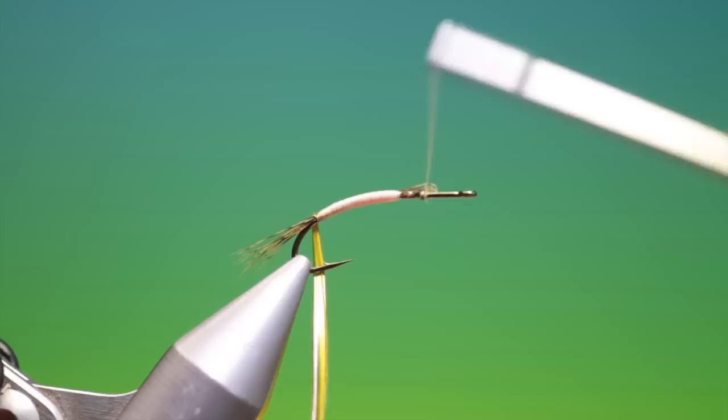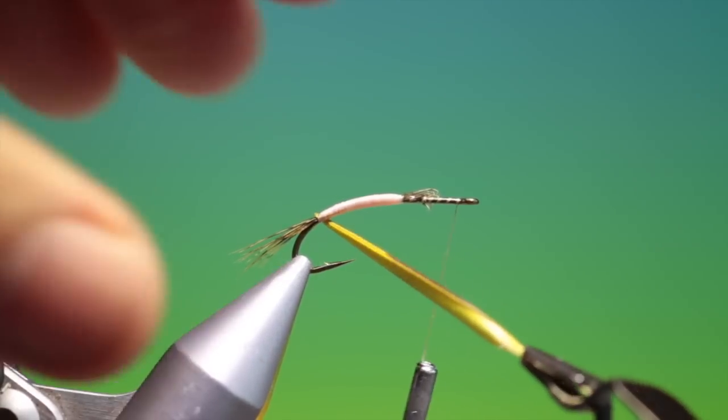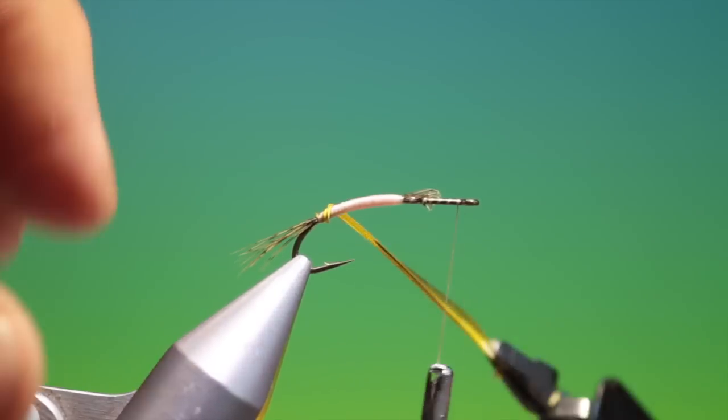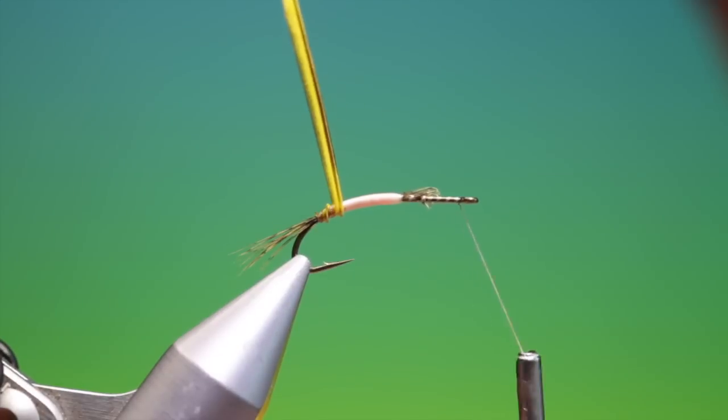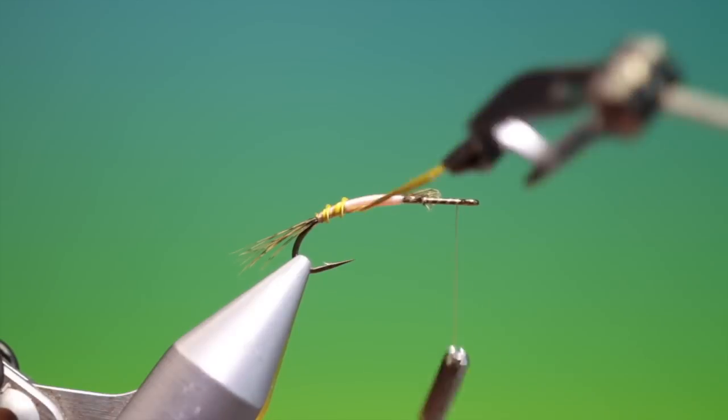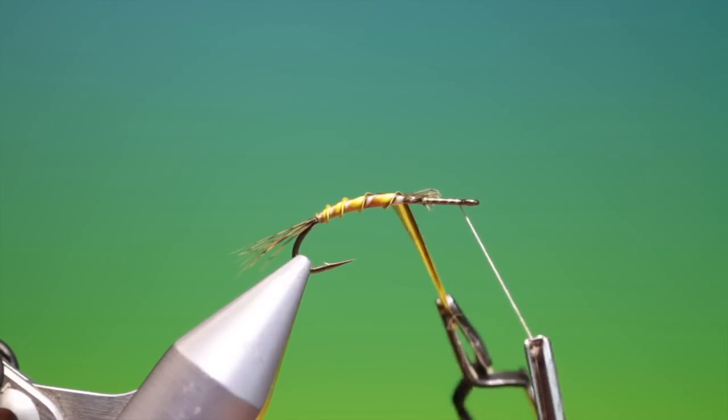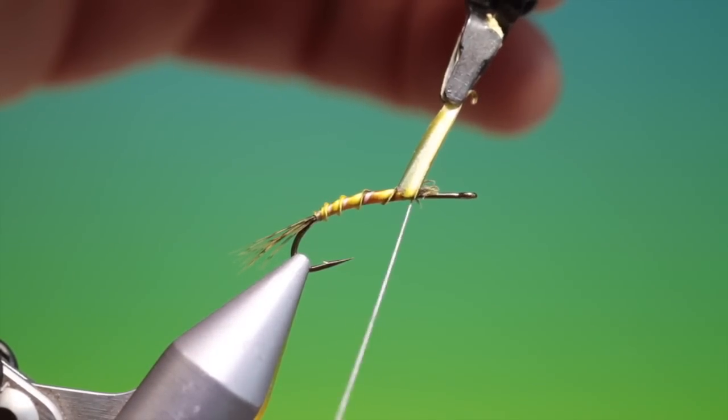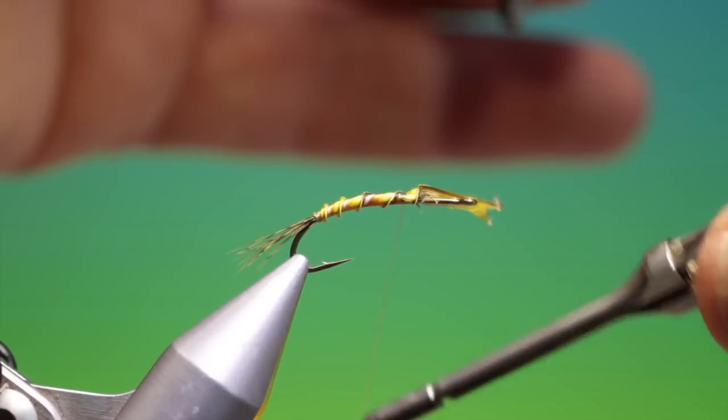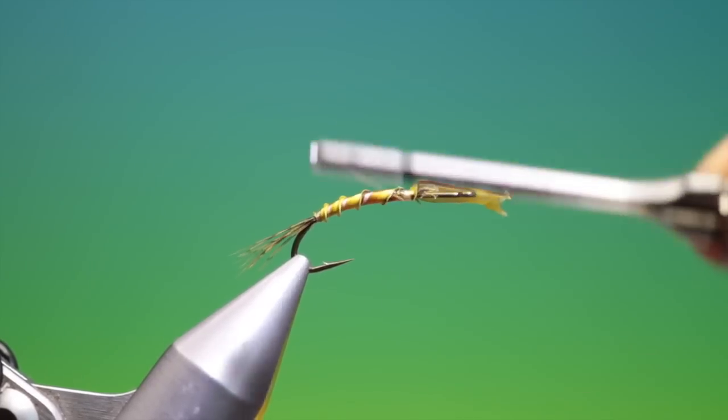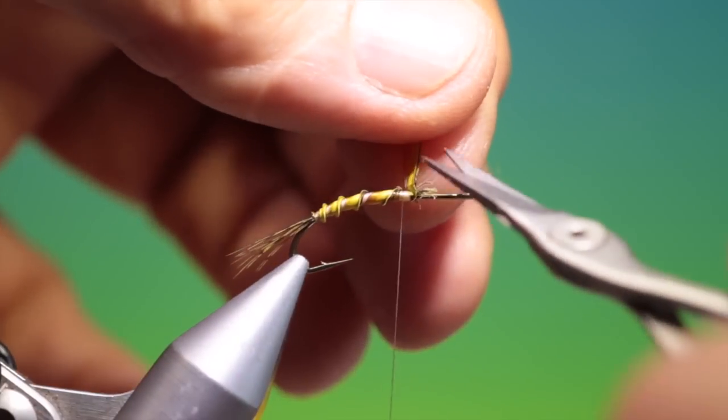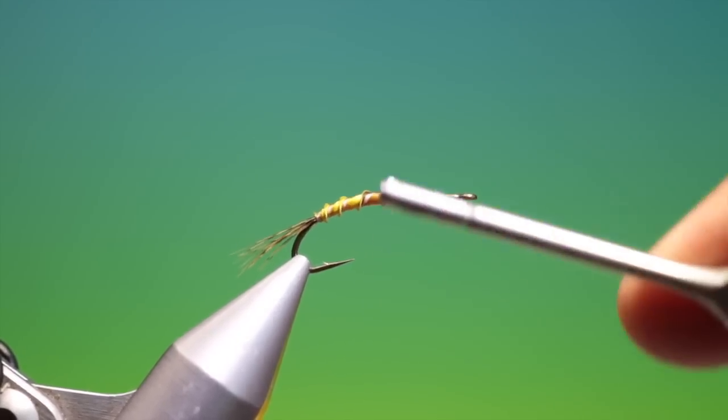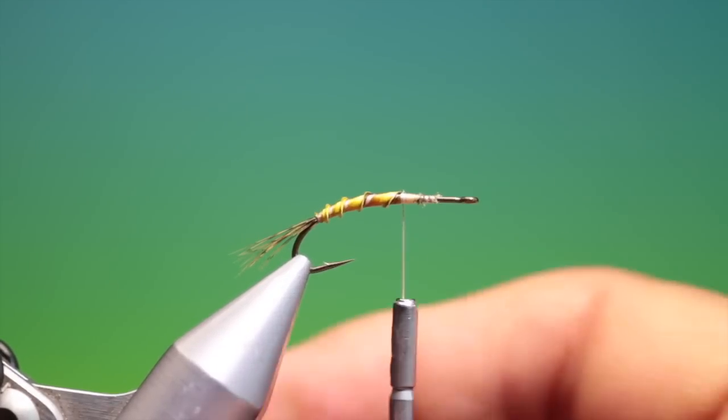I'll just move that thread forward. There we are. That's better. And then what we want is an open turn to show the pink through. All the way up. And we can reverse that. And tie that off. Remove the surplus Biot. Into the abdomen there.